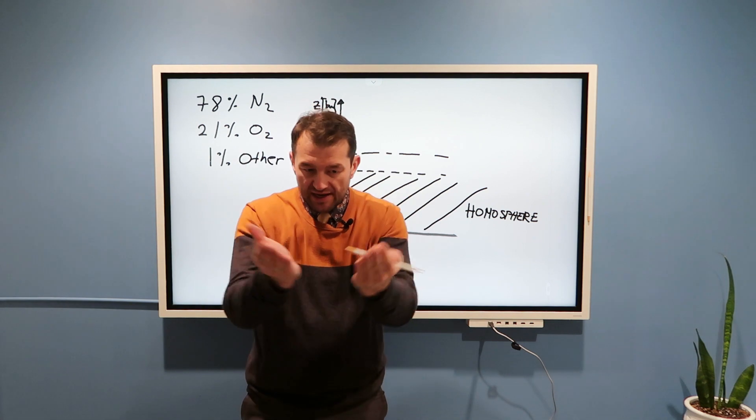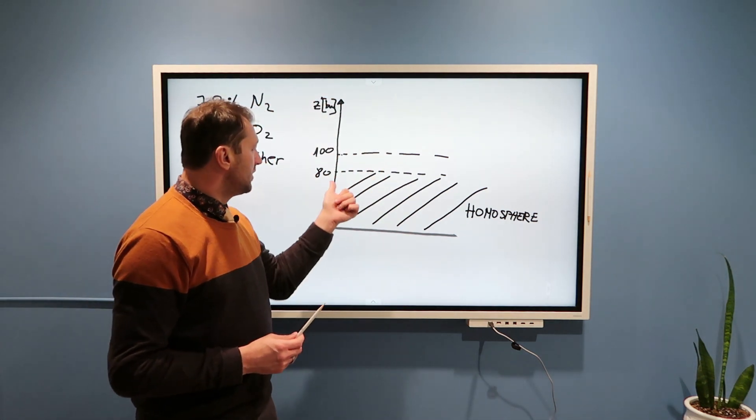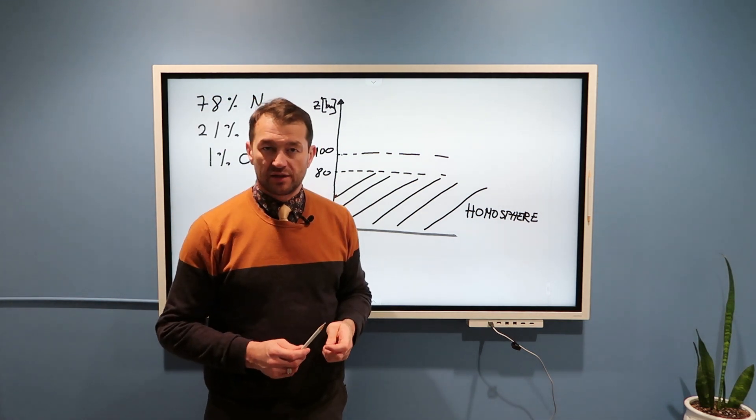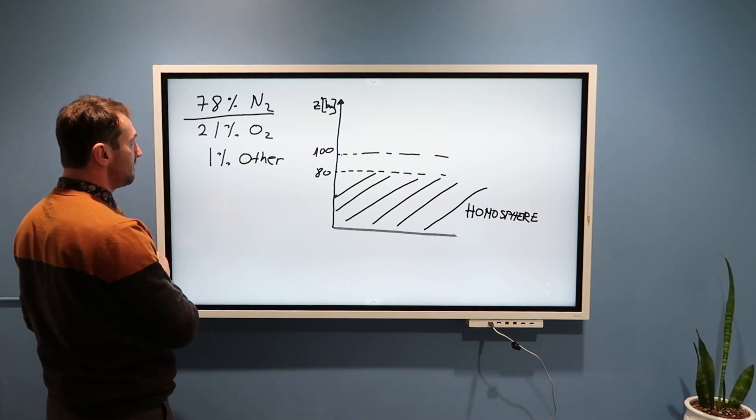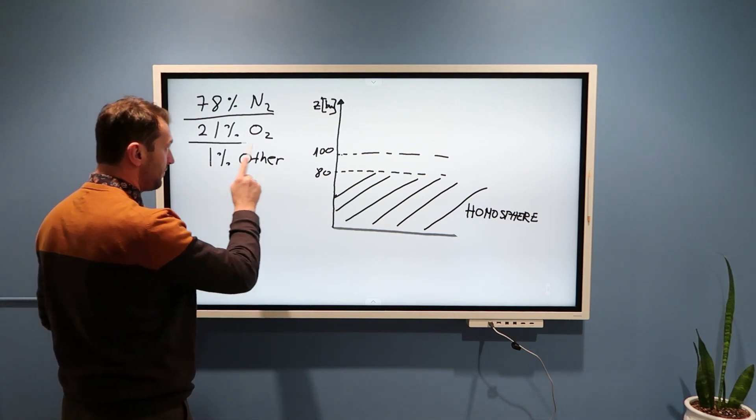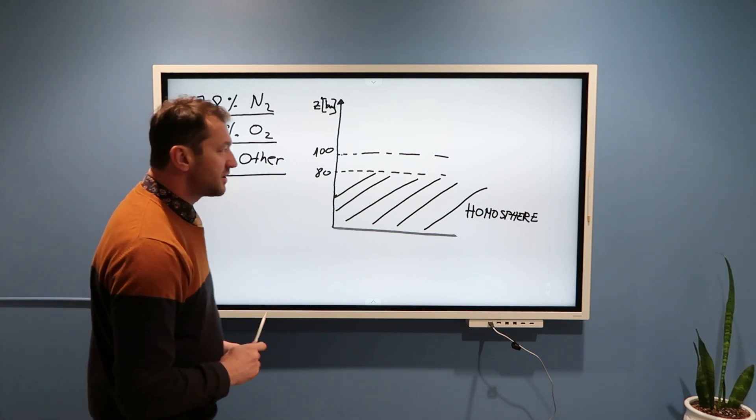If you take a volume of air at any altitude in the first approximately 80 to 100 kilometers, then the relative percentages are that 78% is nitrogen, 21% oxygen, and 1% trace gases.